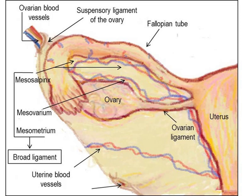It has four described parts: the intramural part, isthmus, ampulla, and infundibulum with associated fimbriae.